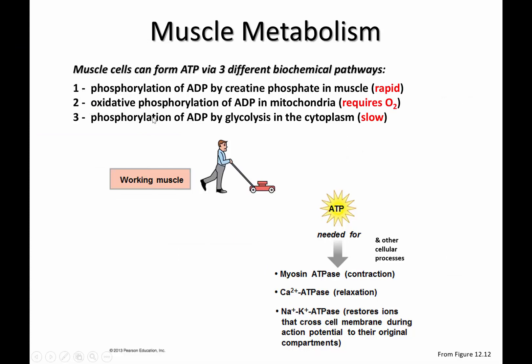Muscle metabolism: muscle cells can form ATP through three different biochemical pathways. The first is the phosphorylation of ADP by creatine phosphate. The second is oxidative phosphorylation of ADP to ATP in mitochondria. The third is phosphorylation of ADP by glycolysis in the cytoplasm. The first process — phosphorylation of ADP from creatine phosphate — is fast. As soon as you start to use ATP for muscle contraction, the supply dwindles, but you have more creatine phosphate in your cells than you have ATP, providing a ready one-step reaction that regenerates ATP.